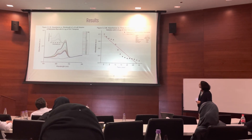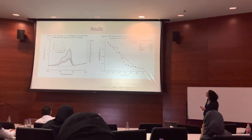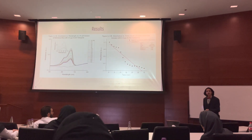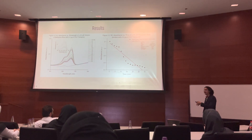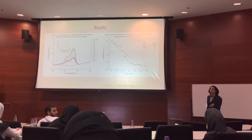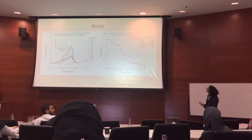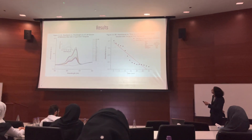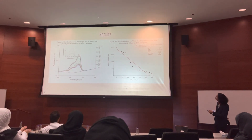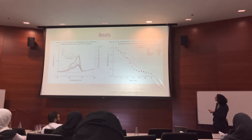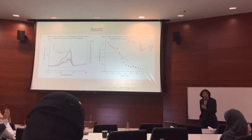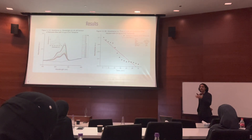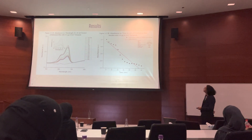Graphing absorbance versus time shows a very linear and direct trend. This is a pseudo-first-order reaction, meaning it's technically second-order but can be treated as first-order, giving a linear relationship between concentration and time. As we take samples at different time points, the absorbance progressively continues to decrease — which is exactly what you want: the lowest amount of dye present, degraded as fast as possible.